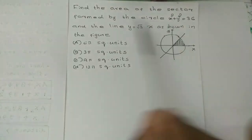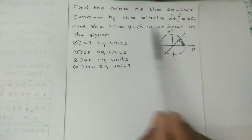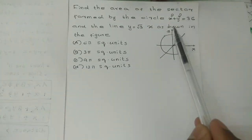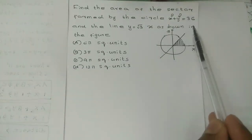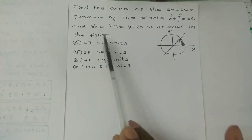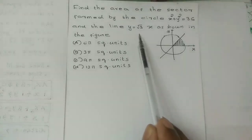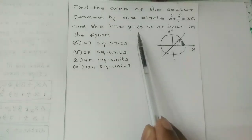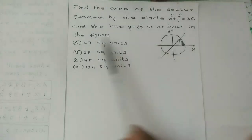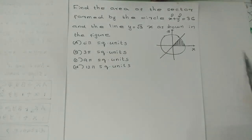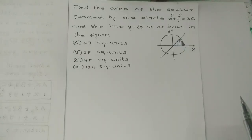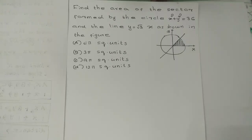First, we will find the area of the sector formed by the circle x² plus y² equals 36 and the line y equals root 3x, as shown in the figure. Option A: 6 pi square units. Option B: 3 pi square units. Option C: 9 pi square units. Option D: 12 pi square units.